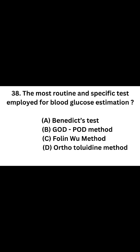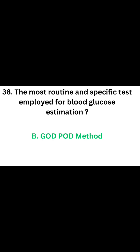Question number 38. The most routine and specific test employed for blood glucose estimation. Option A: Benedict's test. Option B: GOD-POD method. Option C: Folin-Wu method. Option D: Orthotolidine method. The correct answer is Option B, GOD-POD method. The most routine and specific test employed for blood glucose estimation is the GOD-POD method.